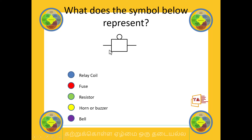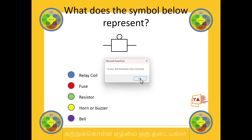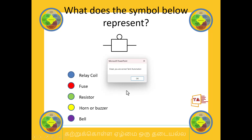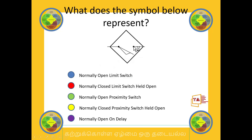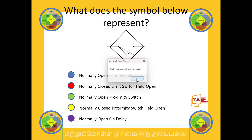If you look at this symbol, it is called a bell. If there is no buzzer, there is no fuse — it is called a bell. If you look at this, it is called a proximity switch — this is a normally open proximity switch.